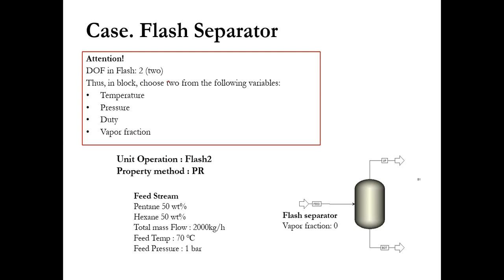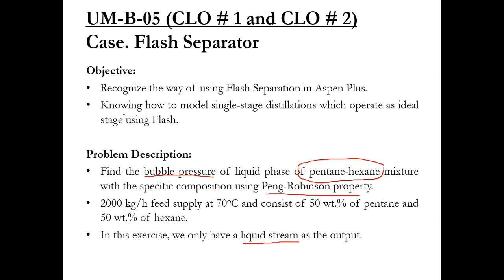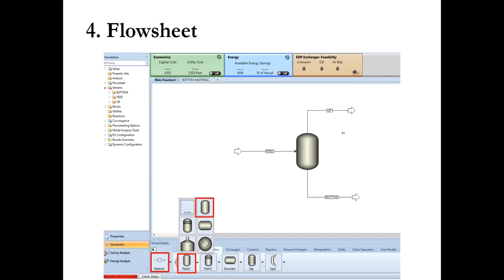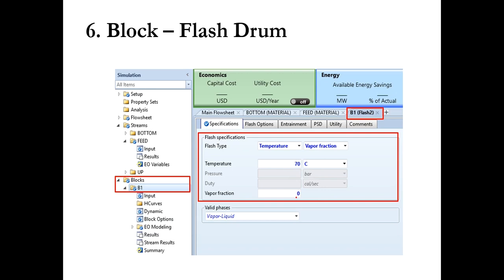We do not have information about heat duty, but we know the mixture is in liquid state. For liquid phases, the vapor fraction is 0, and for vapor phases it is 1. So for this case: pentane 50 weight percent, hexane 50 weight percent, total mass flow rate 2000 kg per hour, feed temperature 70 degrees centigrade, feed pressure 1 bar. In the flash separator, specify vapor fraction as 0 and temperature as 70 degrees centigrade. Select pentane and hexane, choose Peng-Robinson, run analysis, then go to simulation and set up the flash separator with the same connections.